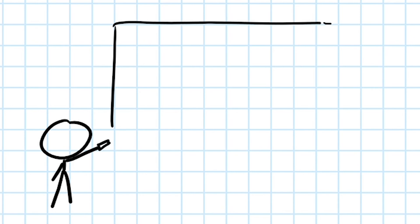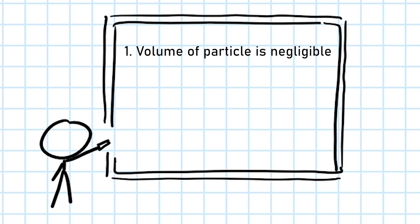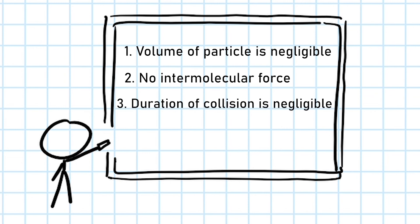Here is a quick summary of all the assumptions. First, the volume of individual particles is negligible. Second, there is no intermolecular force between particles. Third, the duration of collision is negligible. Fourth, all of the collisions are elastic. These are the four main assumptions of kinetic theory and the ideal gas law.